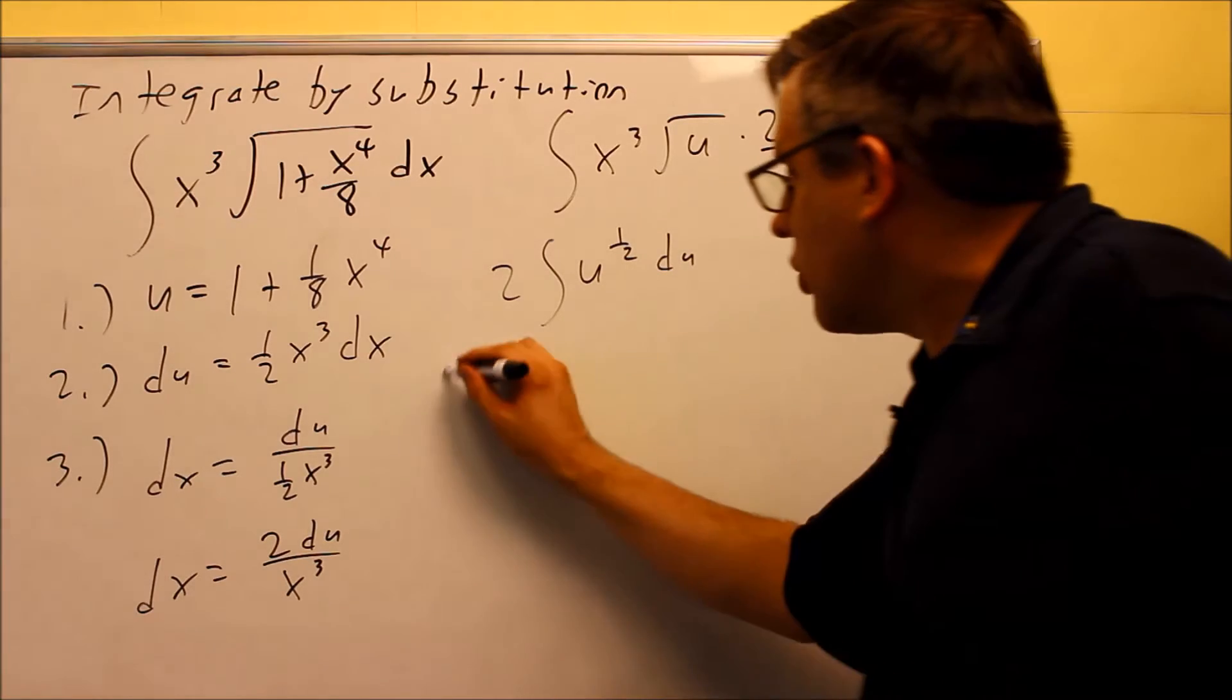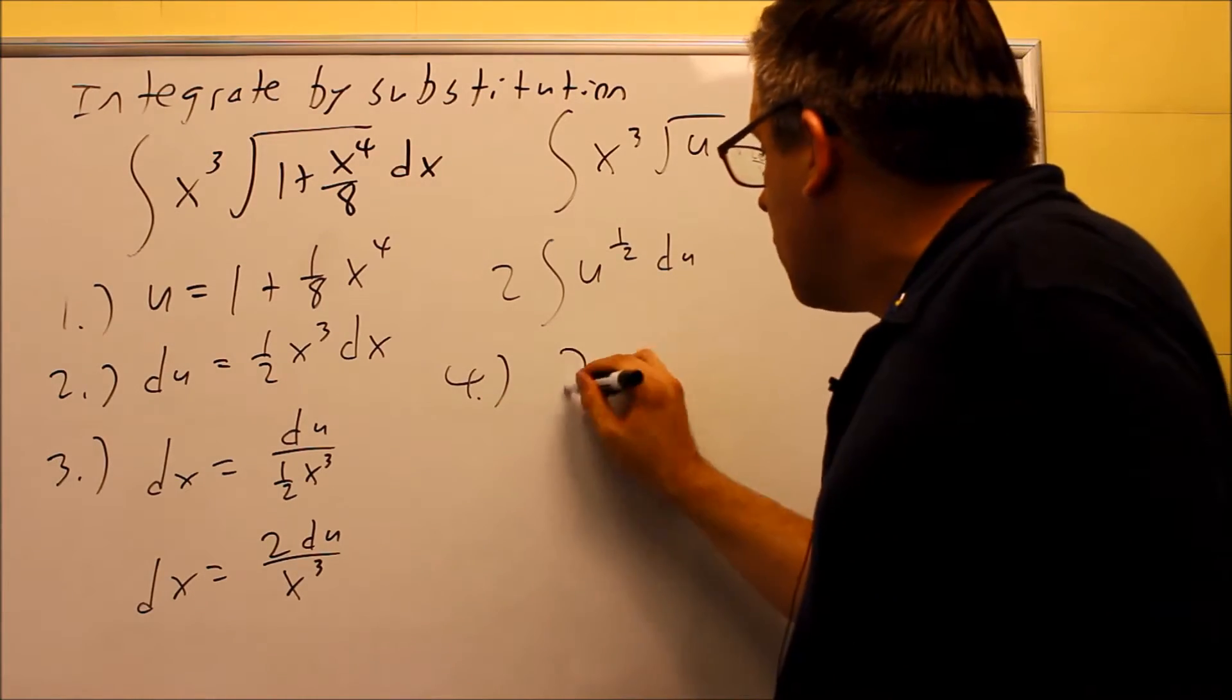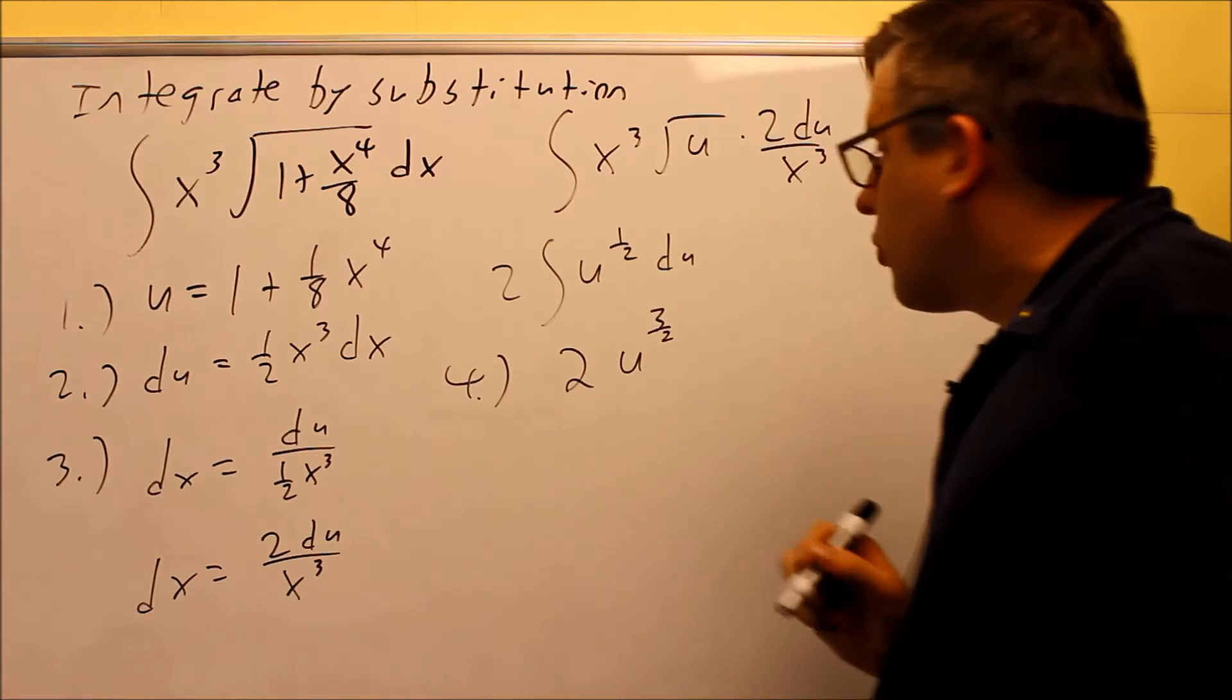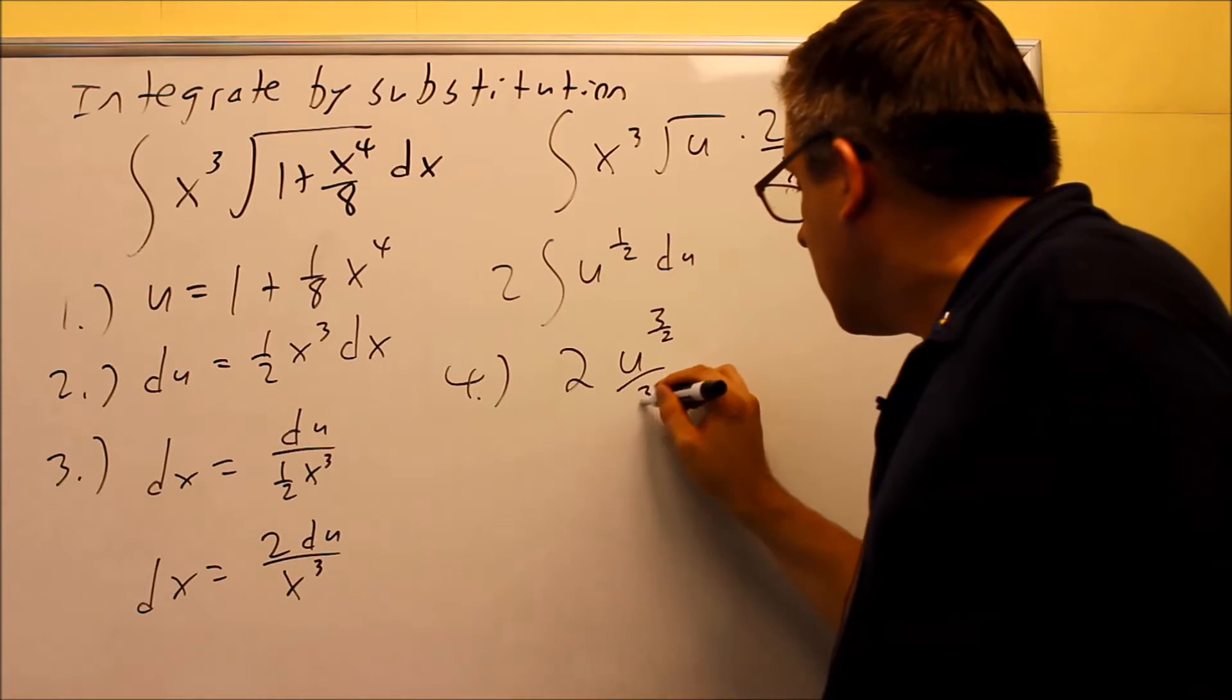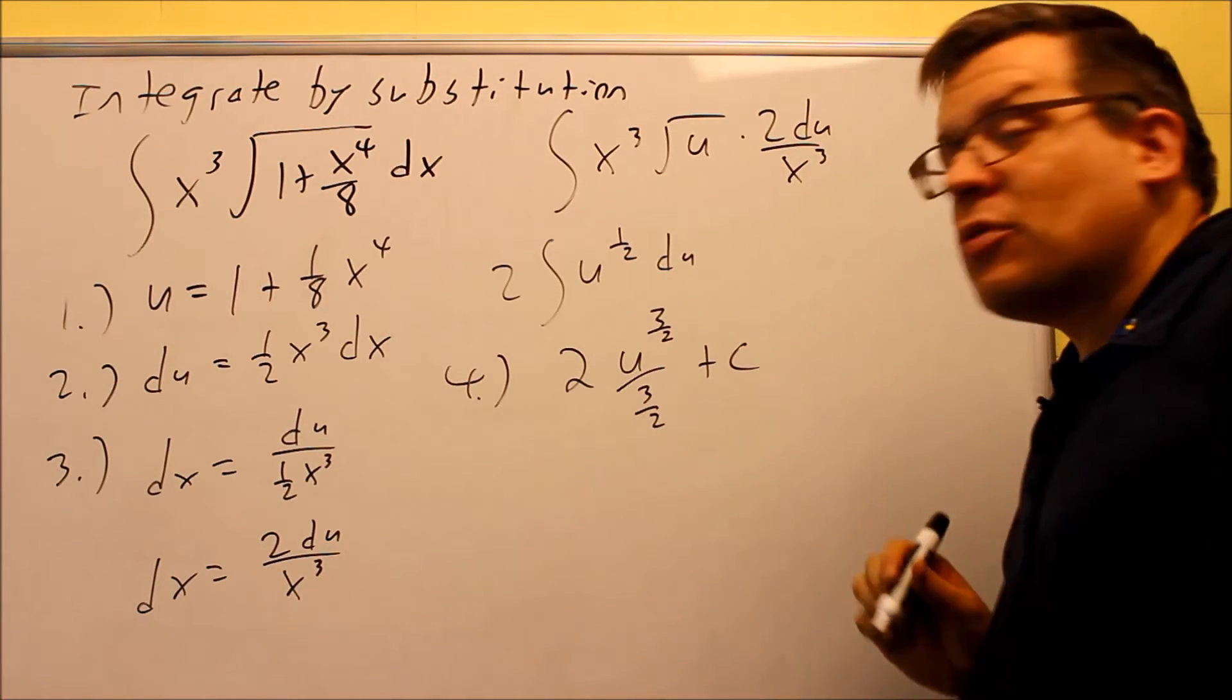We're now ready to take the anti-derivative, and that's what we do in step number 4. We'll leave the 2 right here, raise the power by 1, that's going to be 3 halves there, divided by 3 halves. And don't forget about the plus c we'll have on this one.